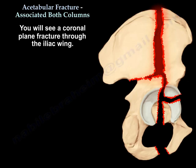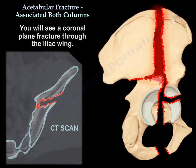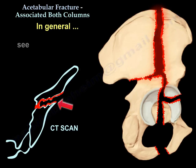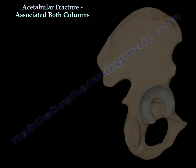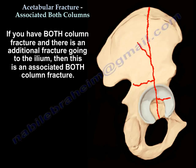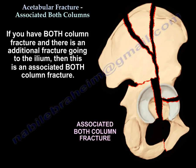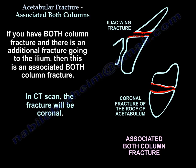You will see a coronal plane fracture through the iliac wing. In general, look for a coronal fracture for both column fractures. If you have both column fracture with an additional fracture going to the ilium, then it is an associated both column fracture, and on CT scan the fracture will be coronal.